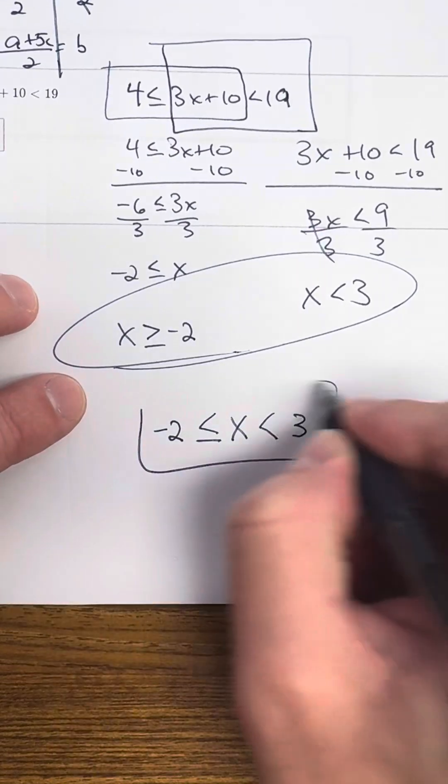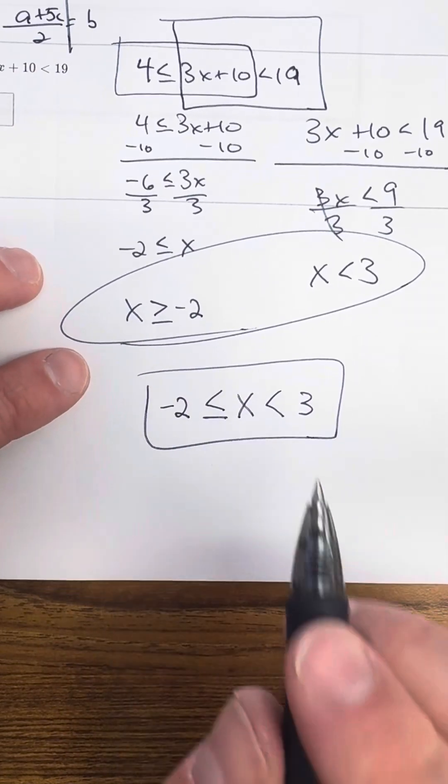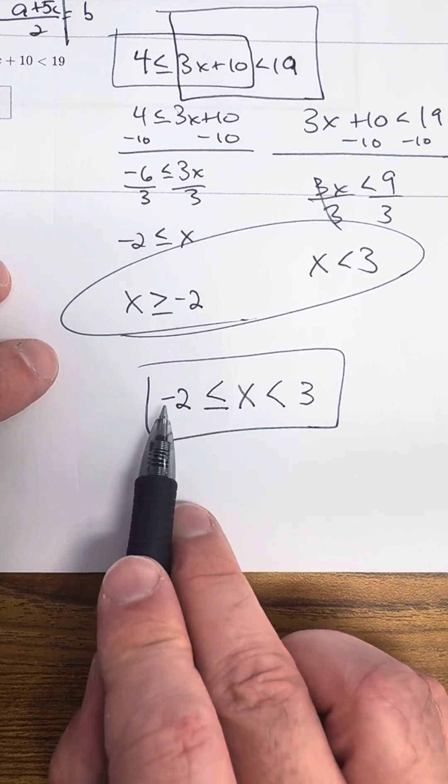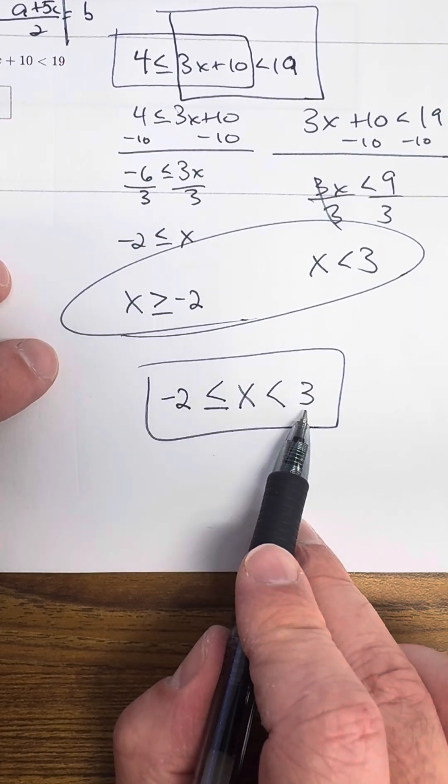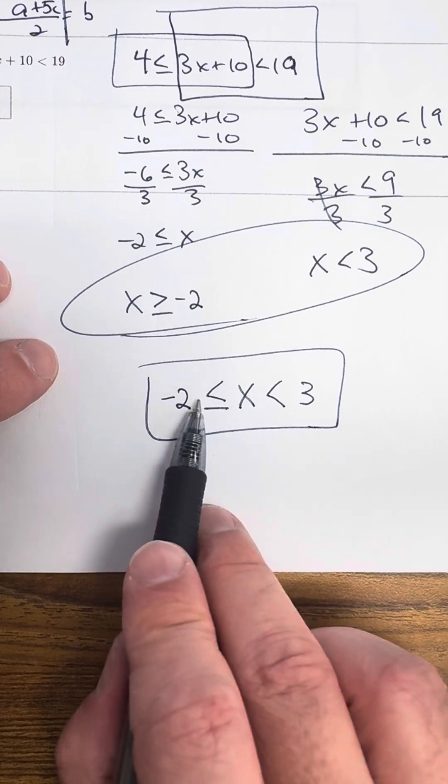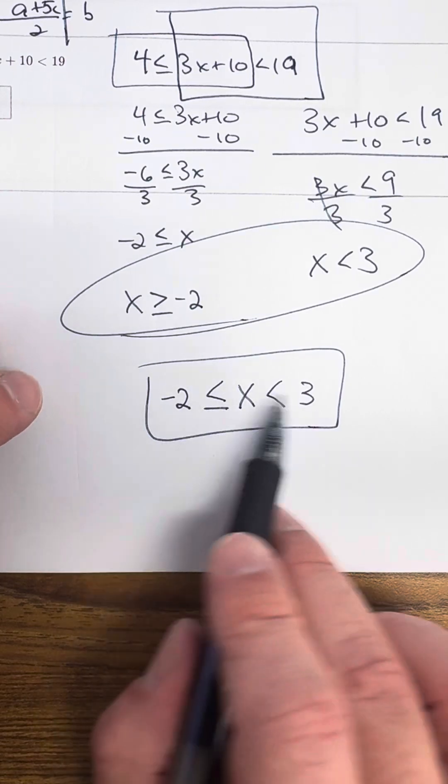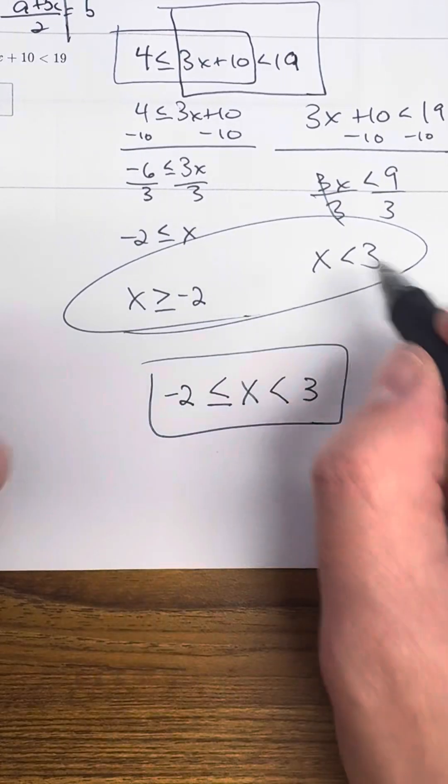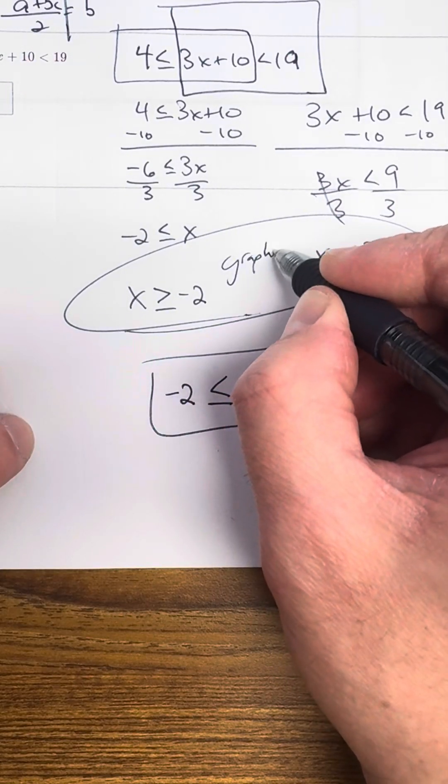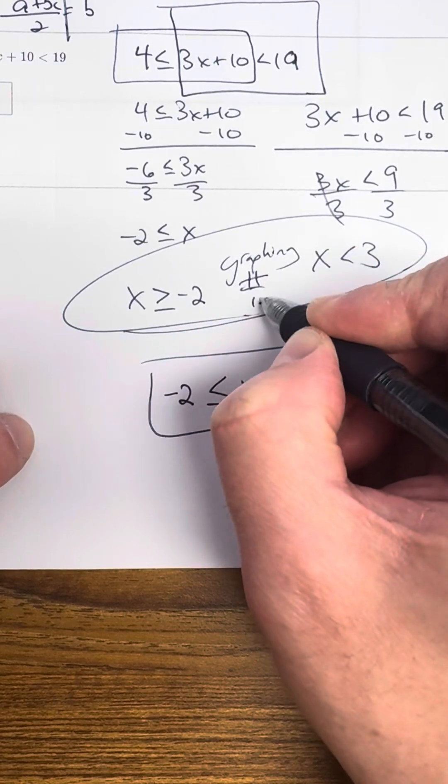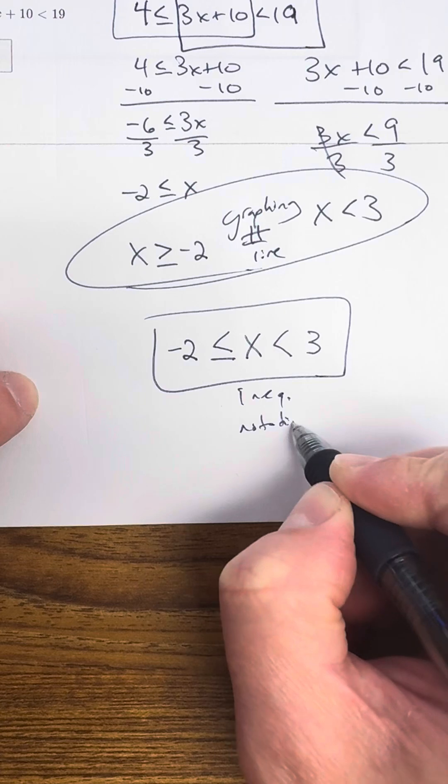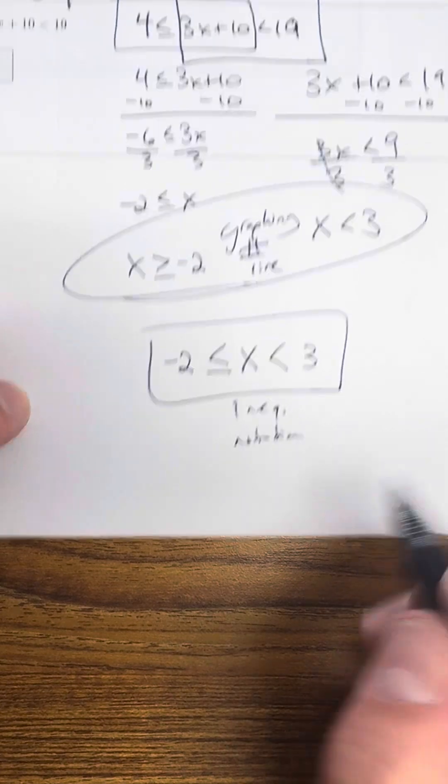Now, you're going to know that this type of notation is correct because the variable's in the middle, lower numbers on the left, higher numbers on the right. Now, both of the inequality signs have to kind of sort of face in the same direction. I know that when you do this, they don't, but this is for graphing purposes, like number line graphing. And this is just for inequality notation. We'll talk a little bit more about that tomorrow. Hope that helps.